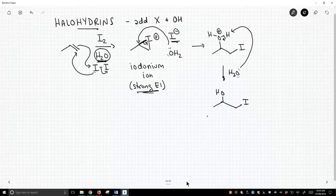And what we form is a halohydrin because we've added a halide and we've added an OH. In this case, when we're fancy, it's called an iodohydrin. But it's an example of a halohydrin.